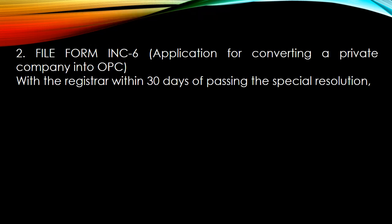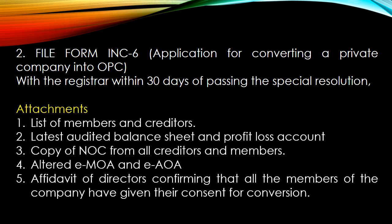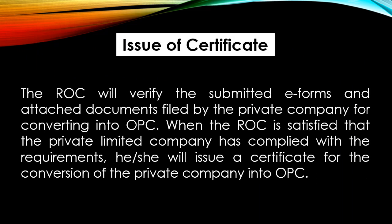Next is to file form INC-6. INC-6 is the application for converting a private company into OPC. INC-6 भी आपको file करना है with the Registrar within 30 days of passing the special resolution, along with the following attachments: list of members and creditors, latest audited balance sheet and profit and loss account, copy of NOC from the creditors and the members, altered E-MOA and E-AOA, and an affidavit of all the directors confirming that all the members of the company have given their consent for conversion. इसके बाद अगर ROC satisfy हो जाता है कि सारे required documents complete हैं और सारी attachments लगाई हुई हैं, तो ROC आपको एक certificate issue करेगा for the conversion of your private company into OPC.